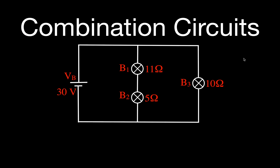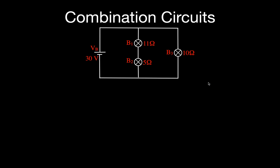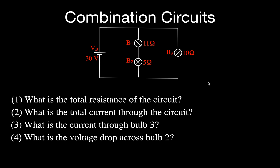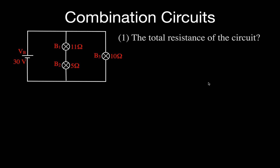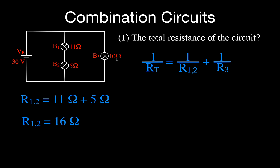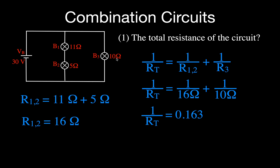Now we'll do the second circuit. This one has two bulbs in series with each other — that series combination is in parallel with a third bulb. Again, a two-step process for total resistance. First, add the series pair: their equivalent resistance is just the sum, giving 16 ohms. Now we have 16 ohms in parallel with 10 ohms: one over R_total equals one over 16 plus one over 10, giving 0.163, so R_total equals one divided by 0.163, which is 6.15 ohms.